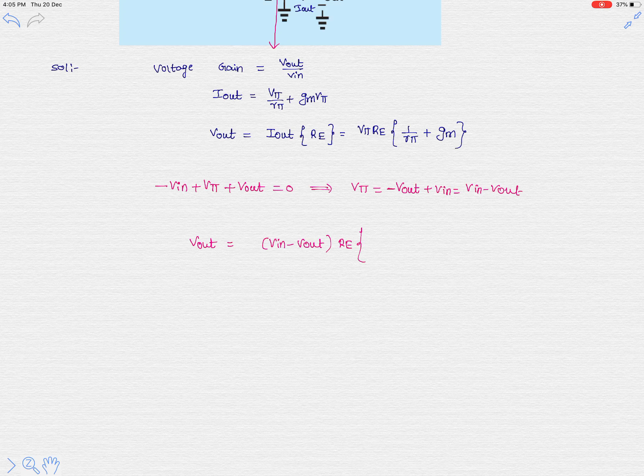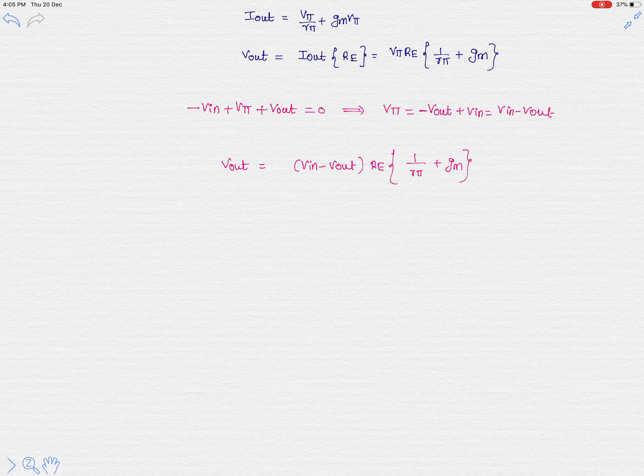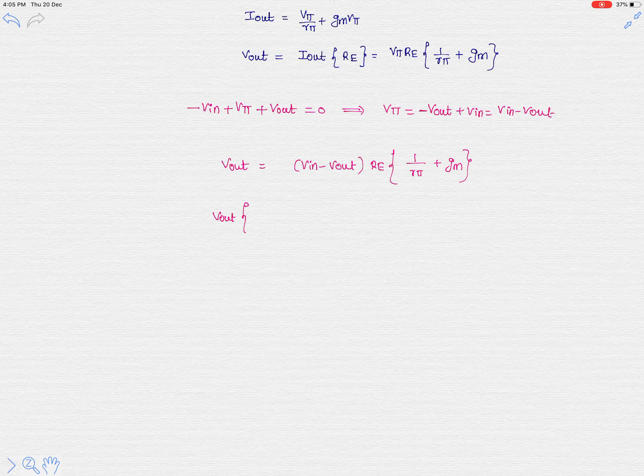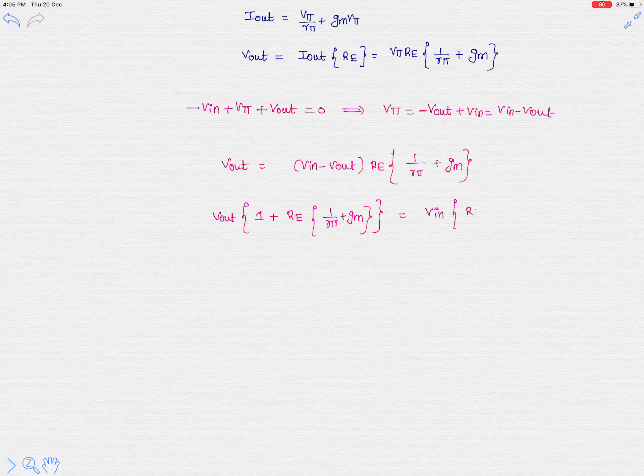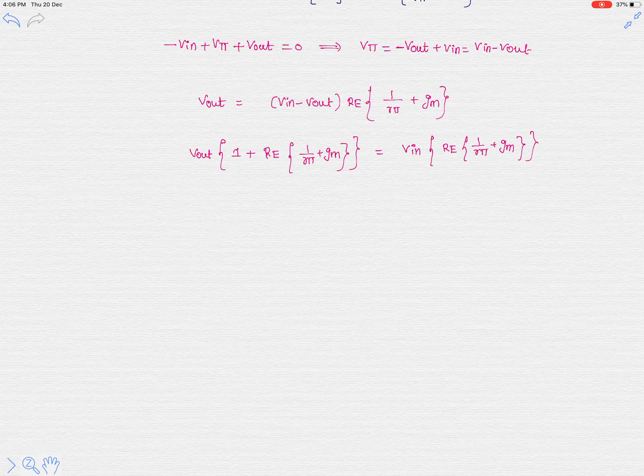Now v_out terms, let's put together at one place. So here it is 1 plus r_E multiplied with 1 over r_π plus gm. So now we got an equation in terms of only v_output and v_input, so now we can easily calculate the ratio of v_out to v_in.